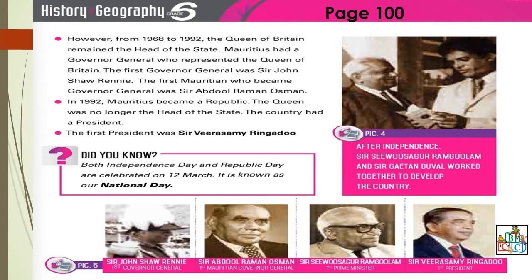In 1992, Mauritius became a republic. You have to know these dates: 1968 independence, 1992 republic day. The Queen was no longer the head of state. When Mauritius became a republic, the decision was then taken by the members of the election. The country had a president, and the first president was Sir Mirasamy Ringadou.